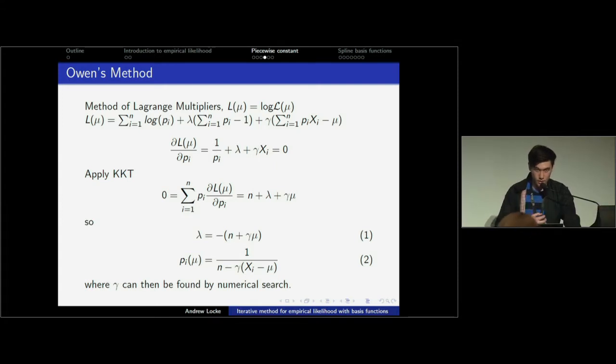This is what Owen has done previously using the method of Lagrangian multipliers. You can see here how he's set out the likelihood. If we want to solve for PIs, we can solve the first derivative. First, we wish to solve the Lagrangian constraint. We can solve lambda directly in this case because we only have this function on the mean. When you do include other more complicated examples, such as regression, it does take a little bit more work and maybe we can't solve them directly. But in this case, we can solve the mean directly and update it accordingly. Gamma can just be found by numerical search.